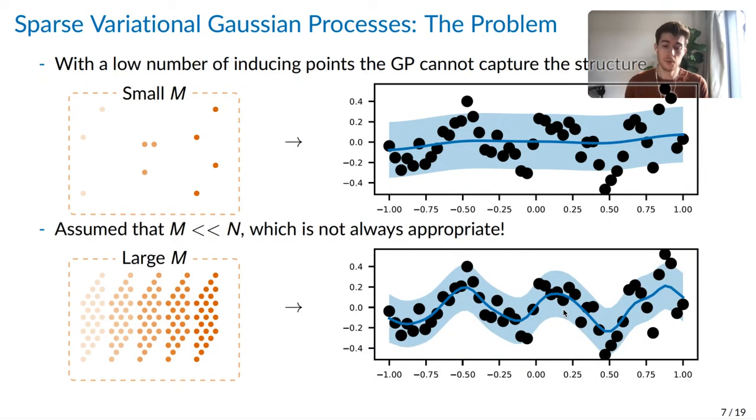In the second instance, we have a very large number of inducing points. The SVGP can now capture the structure of the data, but at the expense of a much higher computational cost.